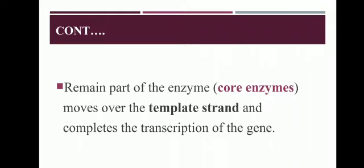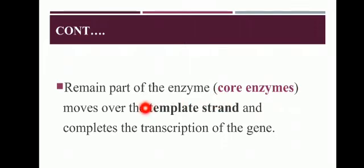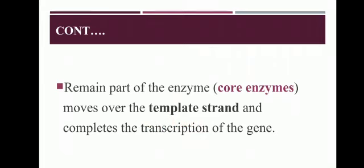When the sigma factor separates from RNA polymerase, the remaining part of the enzyme is called the core enzyme. This core enzyme then moves along the template strand. Since transcription must occur from the template strand, as the core enzyme moves along it, the transcription process is completed.